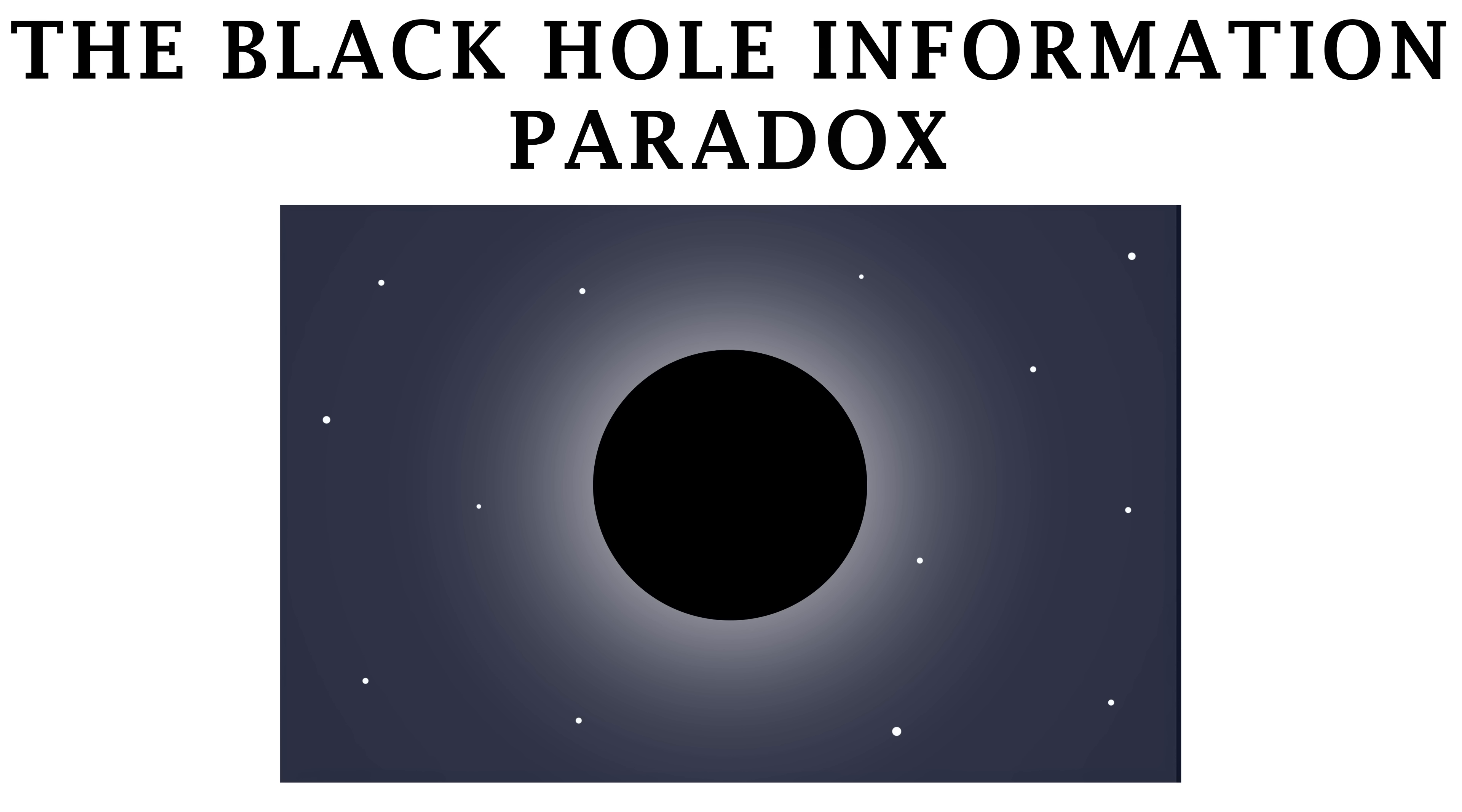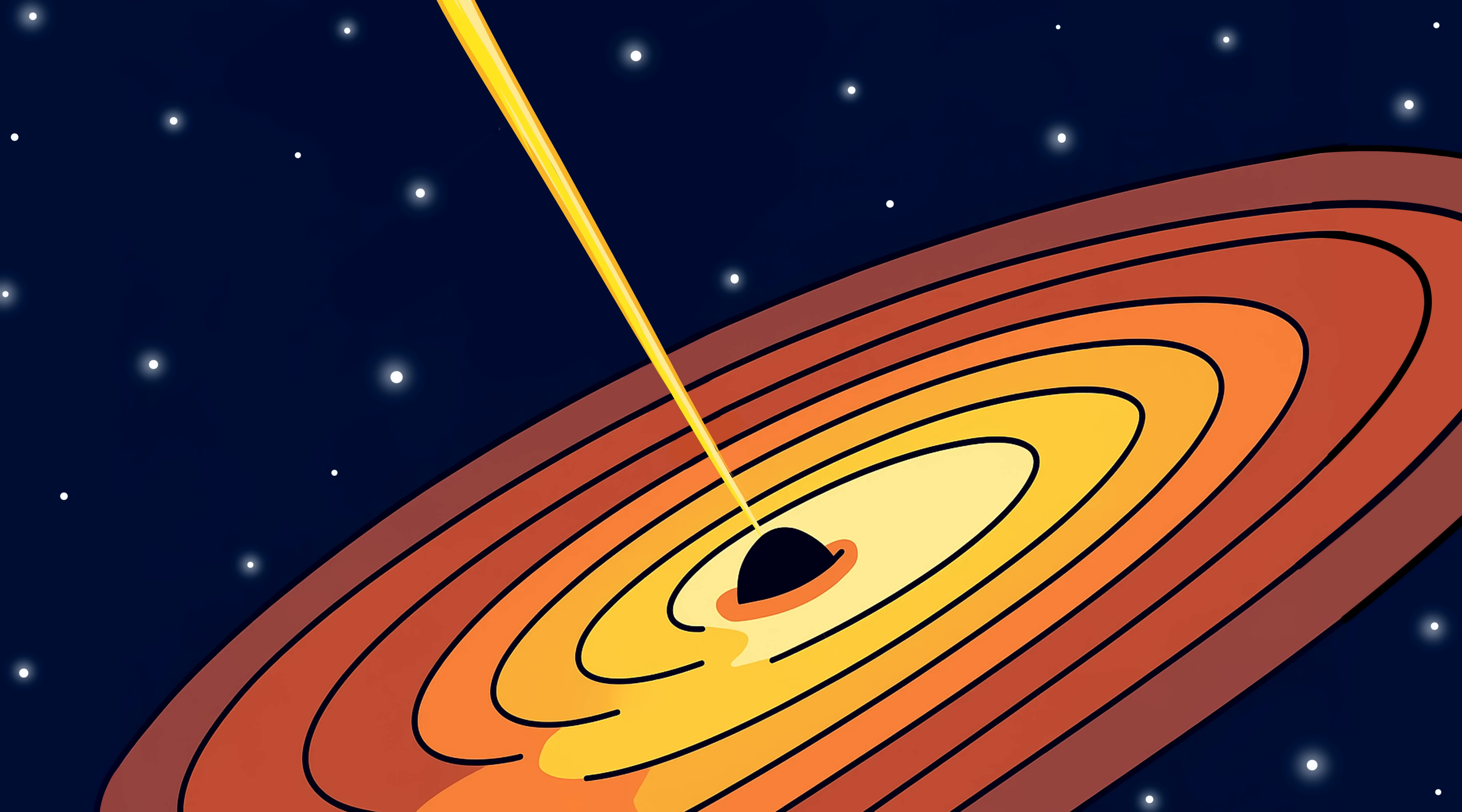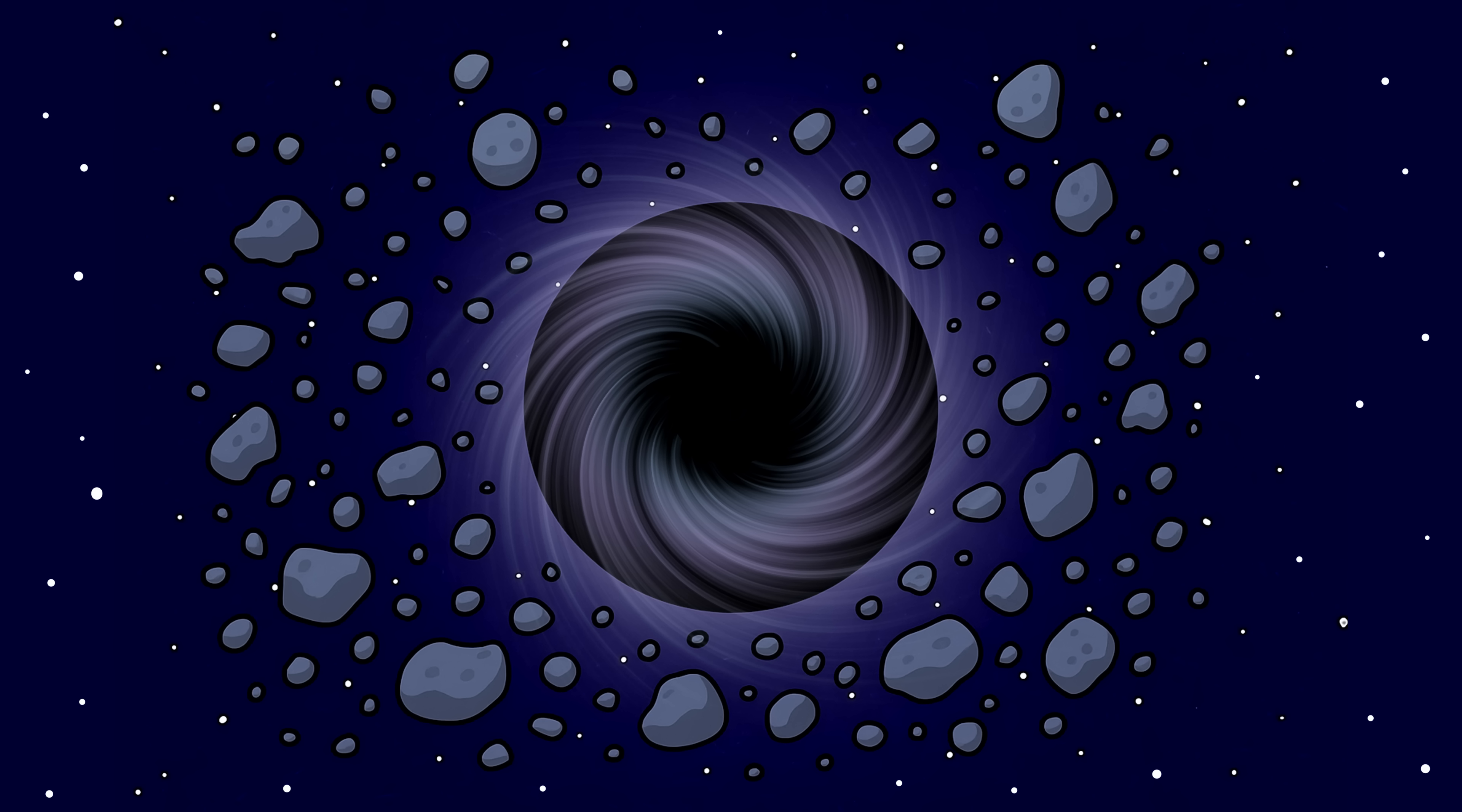Number eight, the black hole information paradox. Black holes are terrifying enough, massive objects that crush everything, even light, into a single point of infinite density. But the real nightmare starts when you ask, what happens to information that falls in? According to quantum mechanics, information about the fundamental details of particles can never be destroyed. It might change form, but it always exists somewhere. But general relativity says anything that crosses a black hole's event horizon is lost forever.